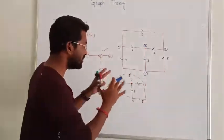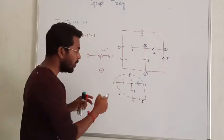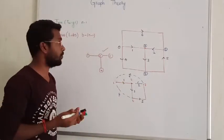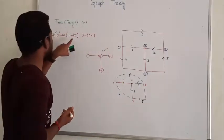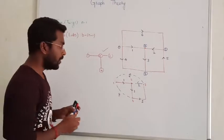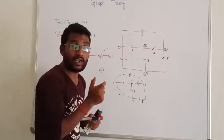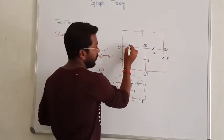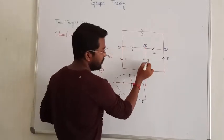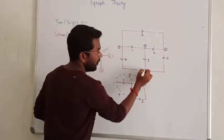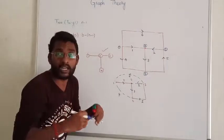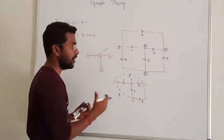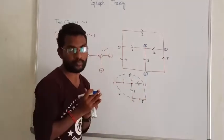So the co-tree is the combination of co-tree plus tree. The next term is twigs and links. Twigs are the branches that we are using to make a tree. So branch number 1, branch number 3, branch number 5 — we are forming a tree. The branches used to form the tree are called twigs.